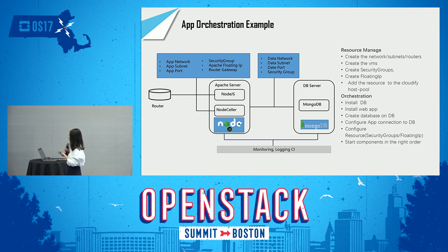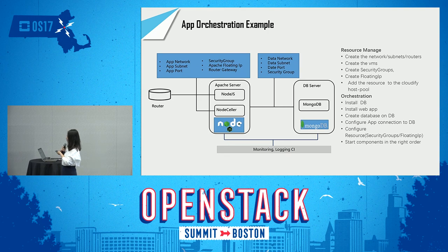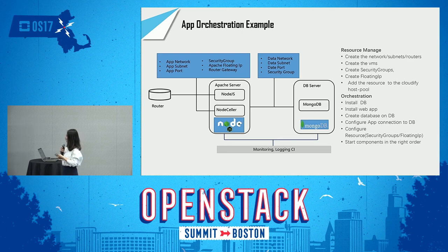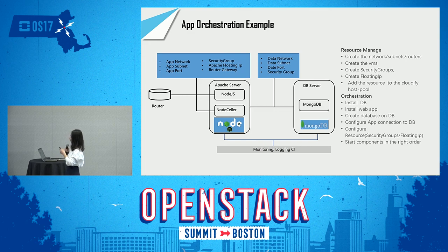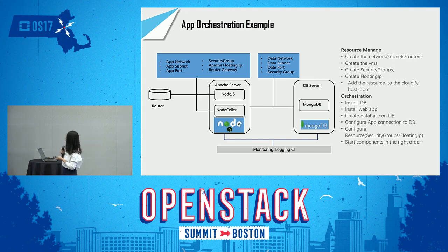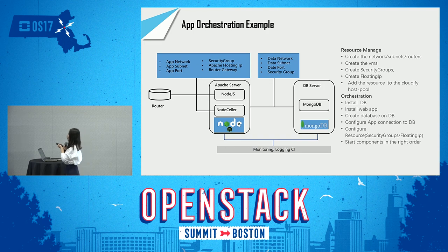Just as we said, in the blueprint, we just tell it to install the DB, install the web app, and create the database on DB. And the configuration — the web application connects to the DB. The resources come from OpenStack. So Cloudify can start the components in the correct order. We all know the application uses some resources — for example, application network, subnet, security group, and floating IP. These are all provided by OpenStack.